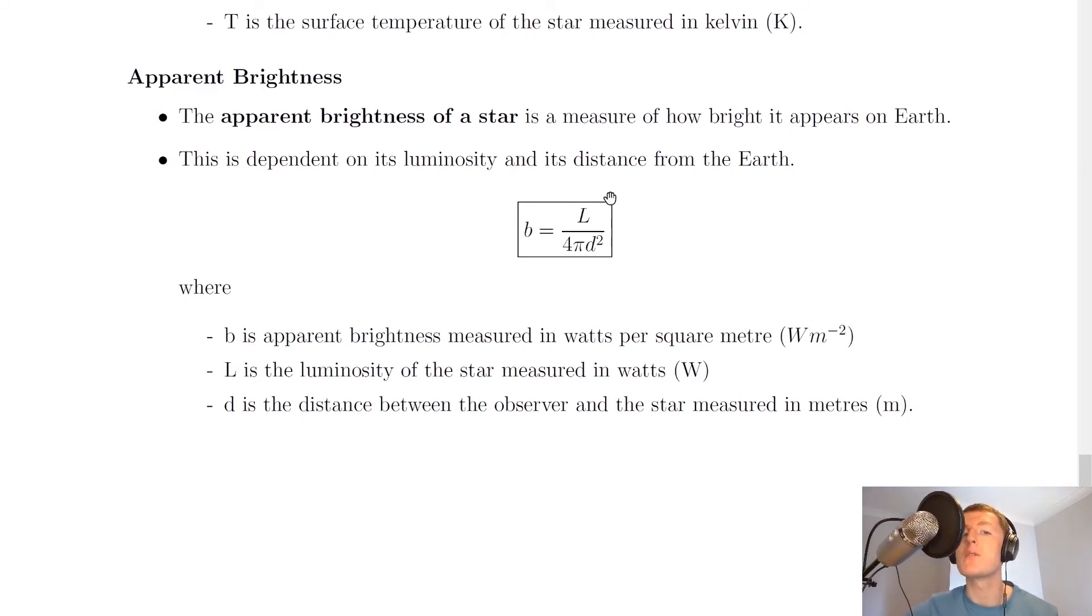The equation is that b equals L over 4 pi d squared, where lowercase b is the apparent brightness measured in watts per square meter. Remember at higher level we looked at irradiance, which also had the units of watts per square meter, so these are similar things. L is the luminosity of the star measured in watts, and d is the distance between the observer and the star measured in meters.